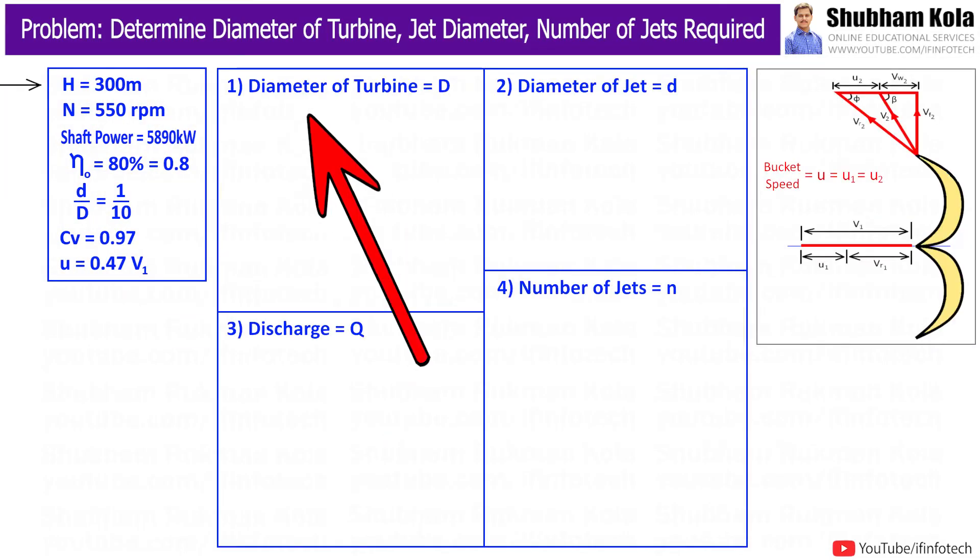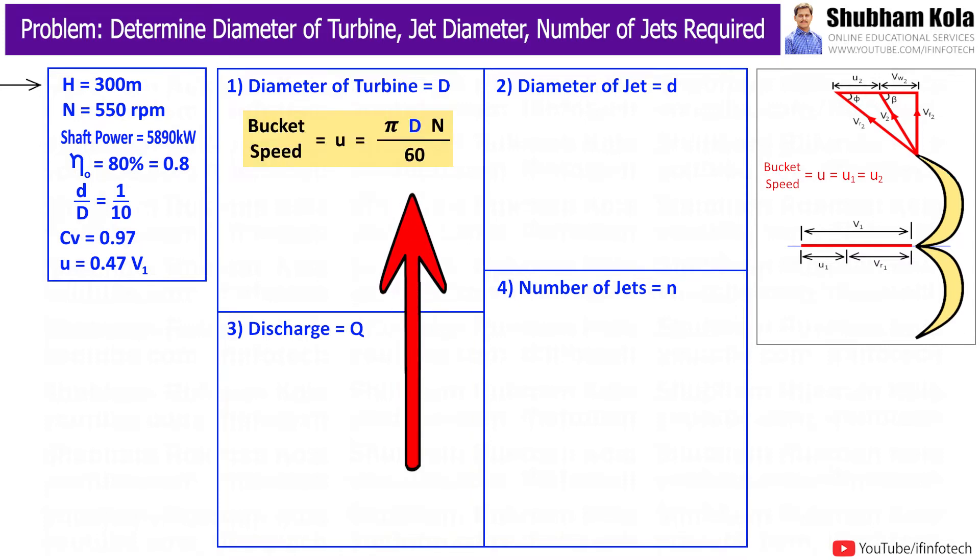To solve this problem, first we want to calculate diameter of turbine, that is D. To calculate D, we will use formula bucket speed u which is π DN by 60.